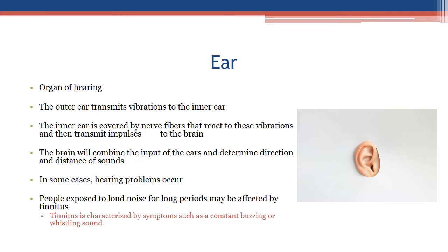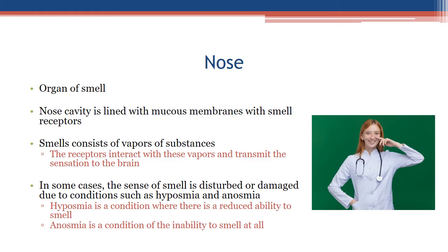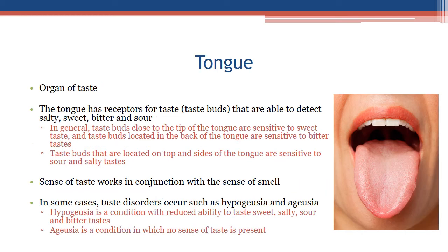Nose — organ of smell: the nasal cavity is lined with mucous membranes containing smell receptors. Smells consist of vapors of substances; the receptors interact with these vapors and transmit the sensation to the brain. In some cases, the sense of smell is disturbed or damaged due to conditions such as hyposmia, a reduced ability to smell, or anosmia, the complete inability to smell.